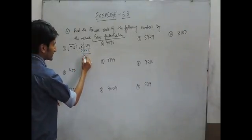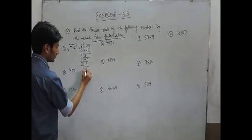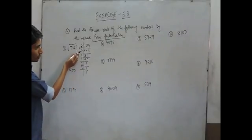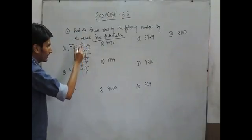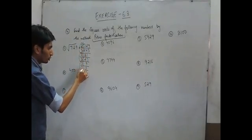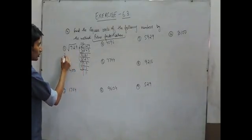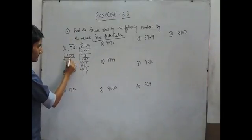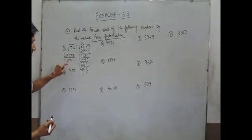Again this can be divided by 3, and again divided by 3 — continuing until we reach 1. So in this case we have got 6 prime factors. We make pairs of two same prime factors, take one from each pair, and multiplying them gives us 27. So the square root of this number is 27.